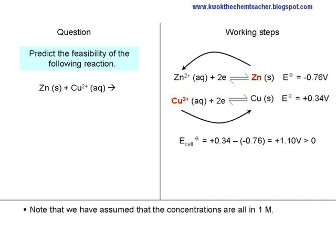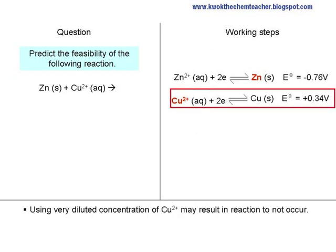Note that we have assumed that the concentrations are all at 1 mol per dm³. Using a very diluted concentration of copper-2-plus may result in the reaction not occurring, because it causes the E-node to become smaller than positive 0.34.